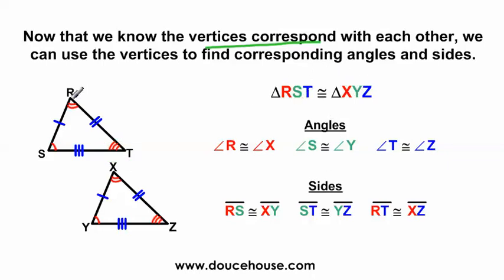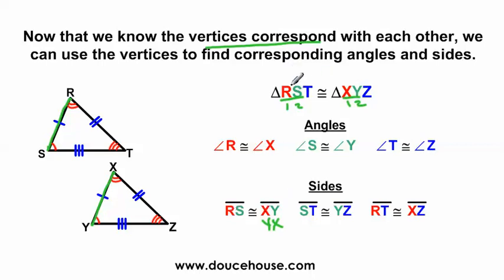You can also use the vertices to indicate which sides are congruent. Vertex R and vertex S — if I connect those points, that gives me side RS. R comes first and X comes first, S comes second and Y comes second, so side RS corresponds with side XY. Line segment RS is congruent to line segment XY. It's important that the order matches — R corresponds with X, so R comes first and X comes first. I can't say RS is congruent to YX, because Y is second and R is first — the order must match.